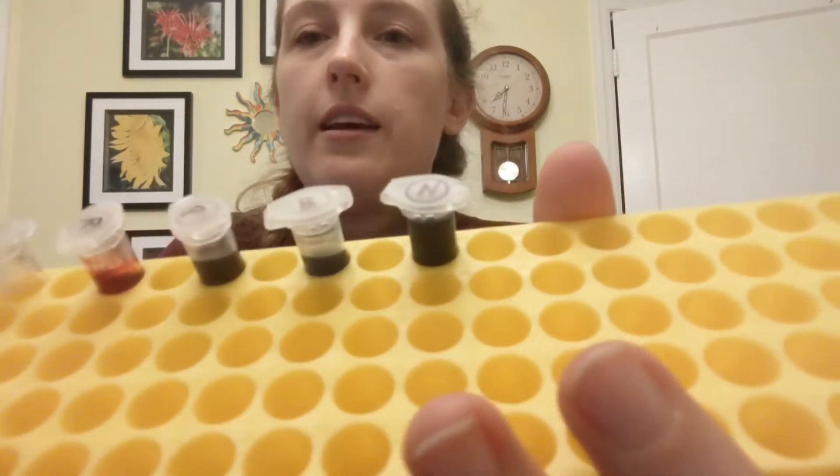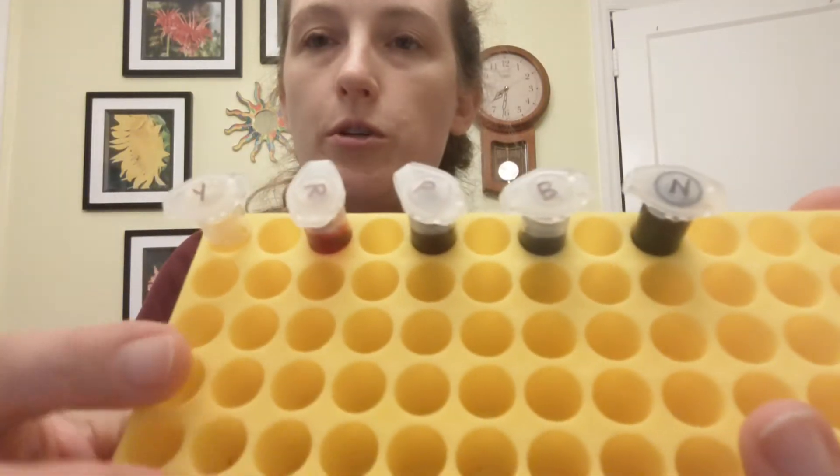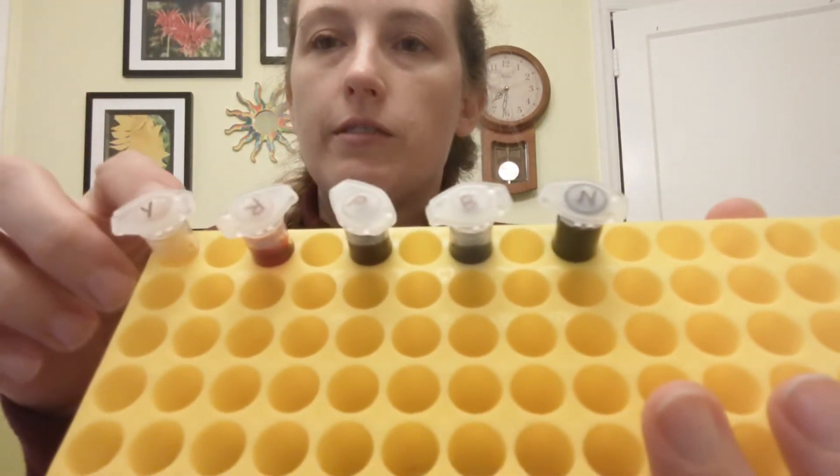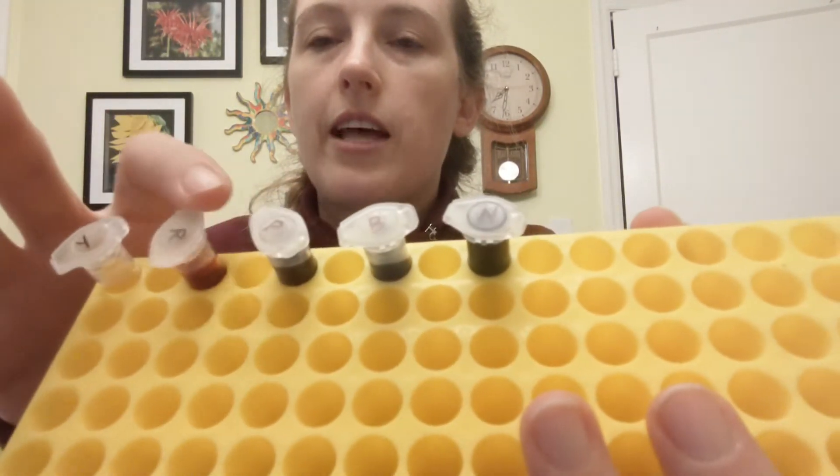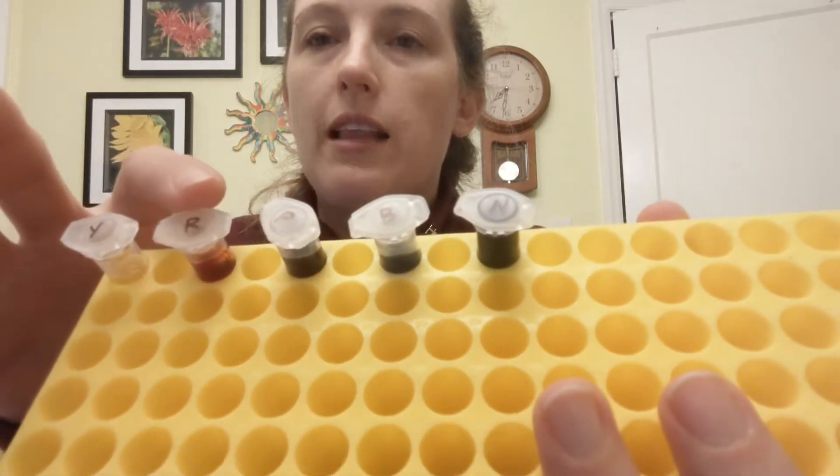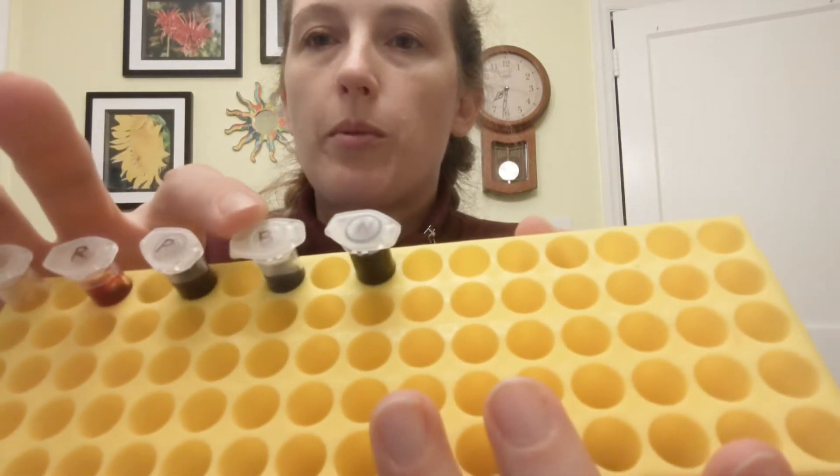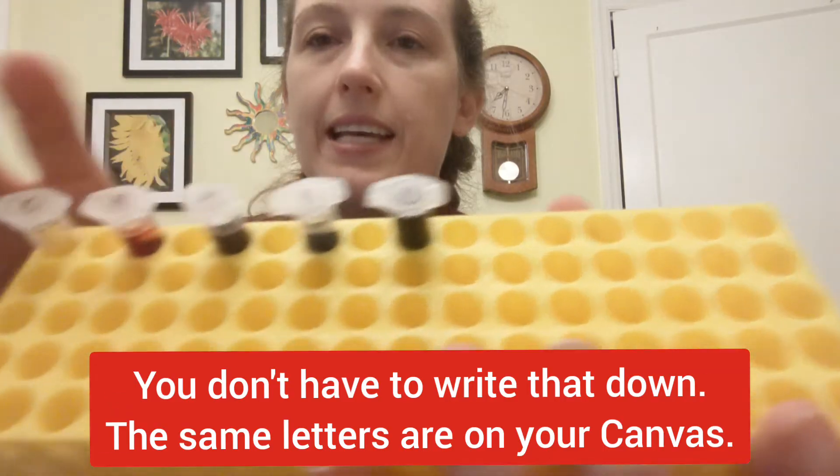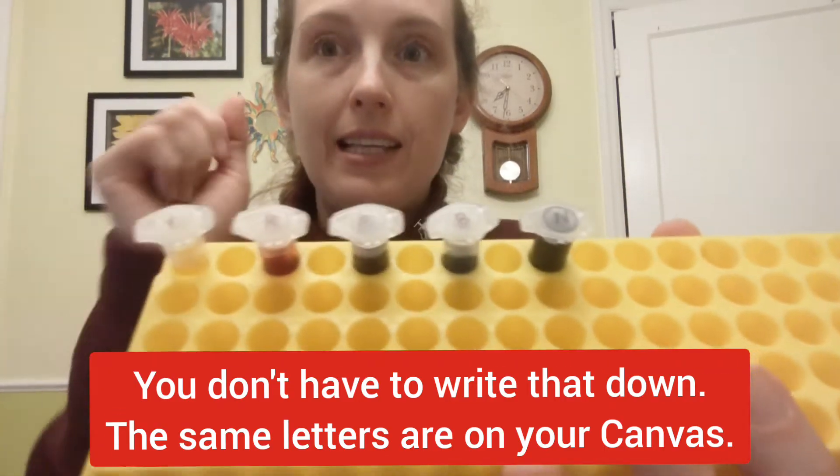You will also need five microtubes which have five different colors of dye and they have letters on the top. So the Y is for yellow, R is for red, P is for purple, B is for blue, and N is for navy which is slightly different than blue.